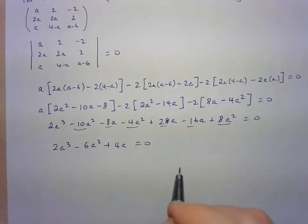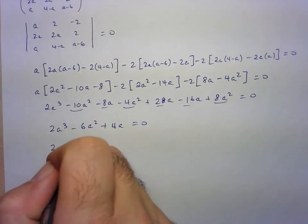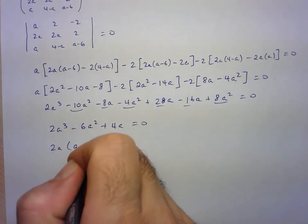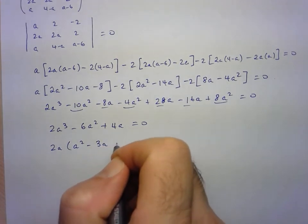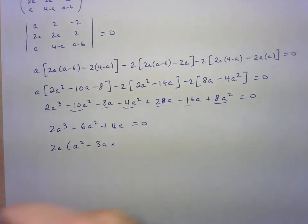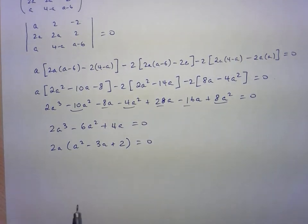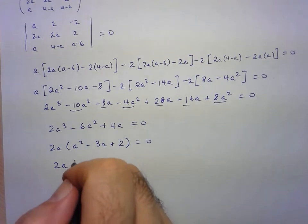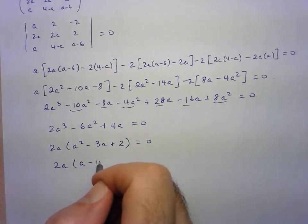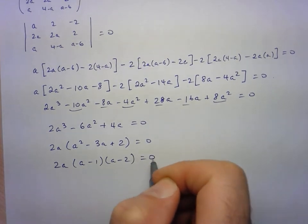And now we've got a fairly easy equation to solve. So let's factor out the 2A here. So we're left with A squared minus 3A plus 2. And here we've got zero. And this factors nicely, so 2A. And what do we have? We have A minus 1, A minus 2.